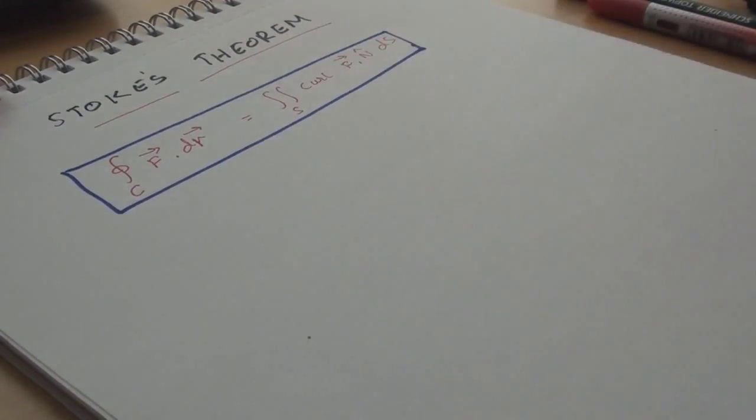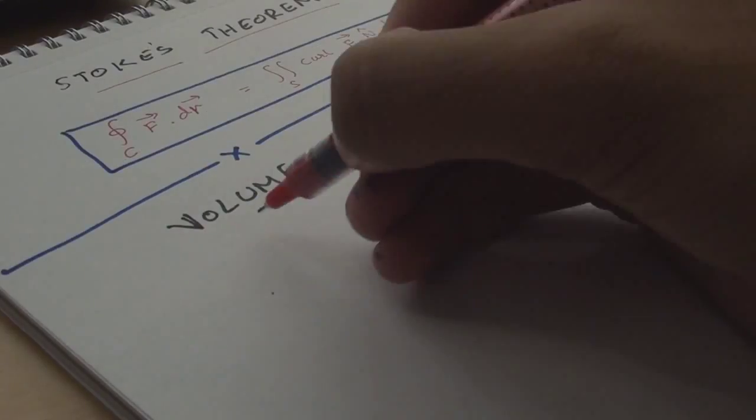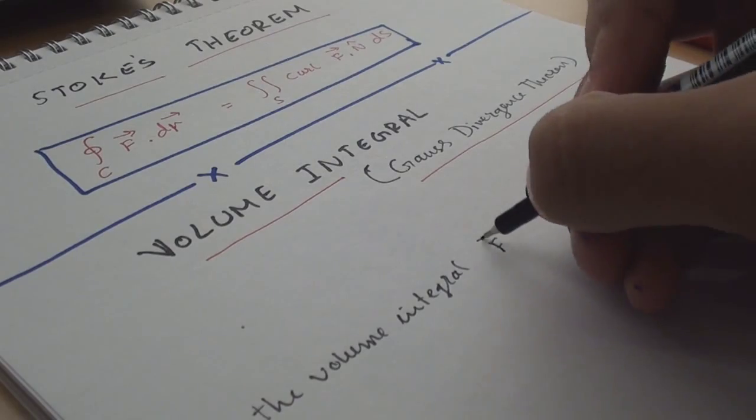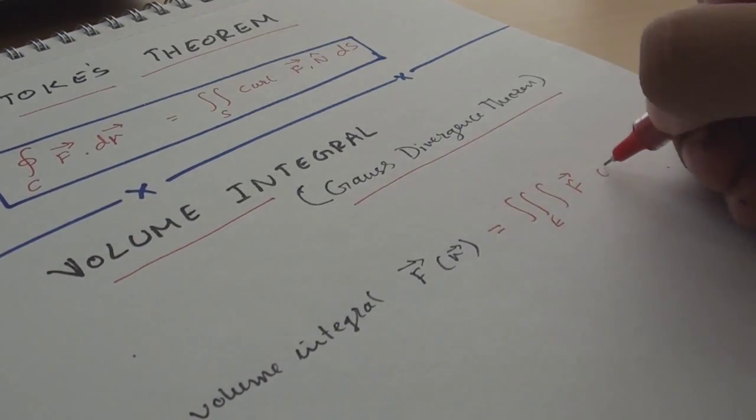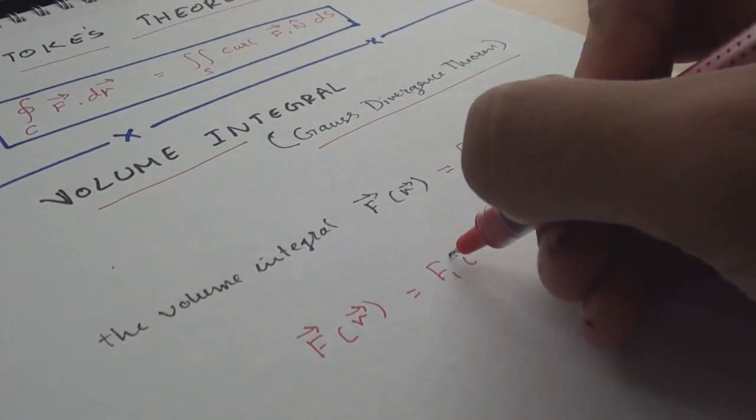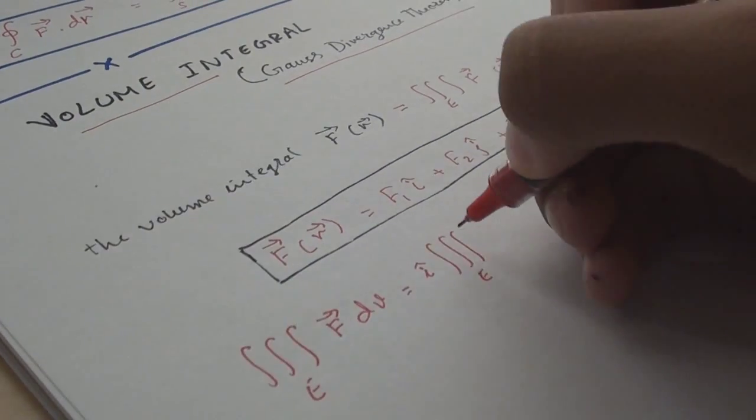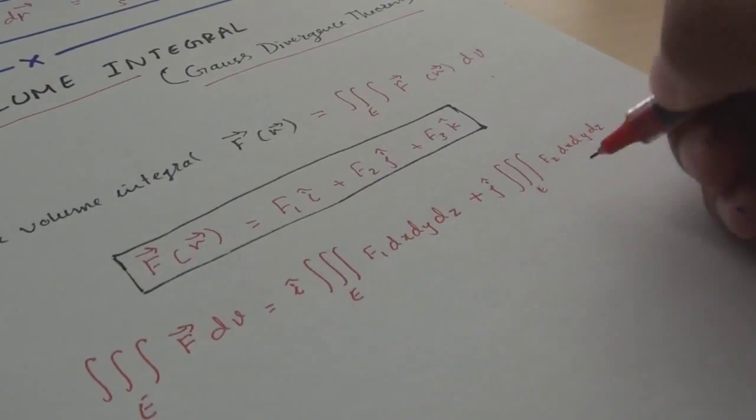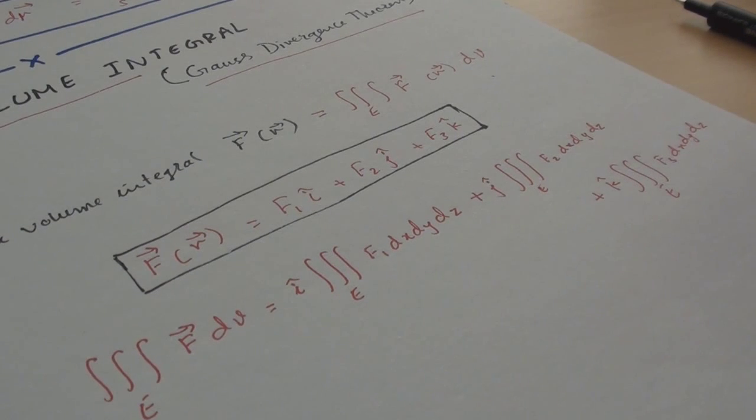Volume integral or the Gauss divergence theorem. Now this transforms surface integrals to volume integrals and conversely. The volume integral of f(r) over E is denoted by the triple integration of f(r)dV if f(r) equals to f1i plus f2j plus f3k. Then the volume integral equals to i times the triple integration of f1 dx dy dz plus j times the triple integration of f2 dx dy dz plus k times the triple integral of f3 dx dy dz.